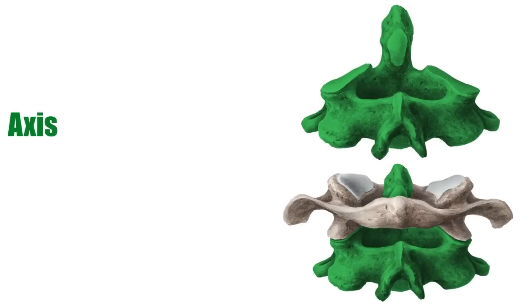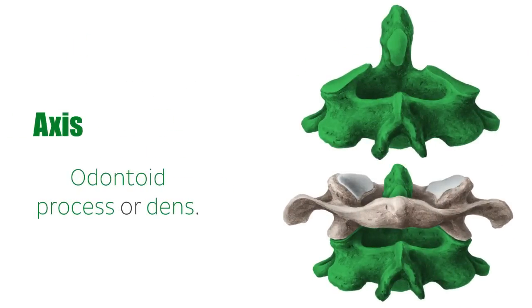The axis, or C2, has its odontoid process, or dens, located on its superior surface. It has a large bifid spinous process, and in contrast to C1, a small transverse process, which houses its foramen transversarium.